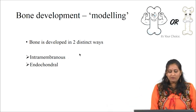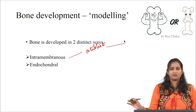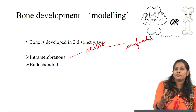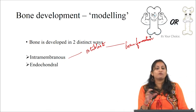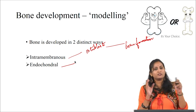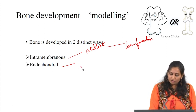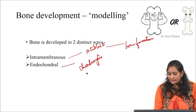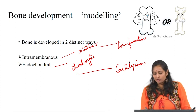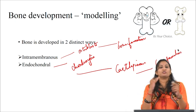In intramembranous bone formation, mesenchymal stem cells are directly developed into osteoblast cells and subsequent bone formation occurs. For example, bones in the mandible, clavicle, or some cranial bones are formed by this process. Whereas in the endochondral pathway, which is how most bones like long bones are formed, mesenchymal progenitor cells first develop into chondrocytes, which then form a cartilaginous and calcified matrix, and subsequent bone formation occurs. These are the two pathways through which bone formation occurs.